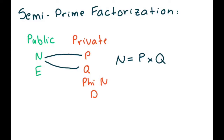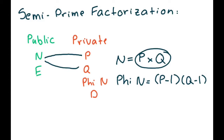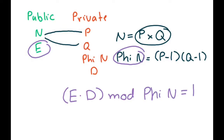The value of n is available to the message interceptor because it is a public key value. So the message interceptor must factor the semi-prime number n into its constituent factors p and q. Once the message interceptor has factored n, he can plug the values of p and q into the expression (p minus 1) times (q minus 1) to find phi(n). After attaining phi(n), he can plug this value along with the public key value of e into the equation e times d mod phi(n) equals 1 and solve for d.